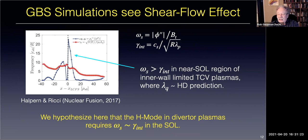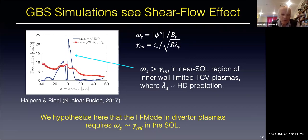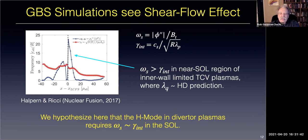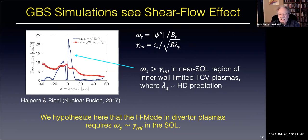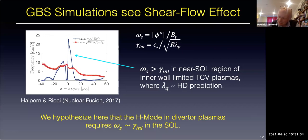I think the right thing is for you to take a look at that paper and see what you think. Another question: how many mode widths across is that region in terms of scales of the interchange? The region where you get the reduction is comparable in width to the scrape-off layer. That's comparable to what you're looking for.